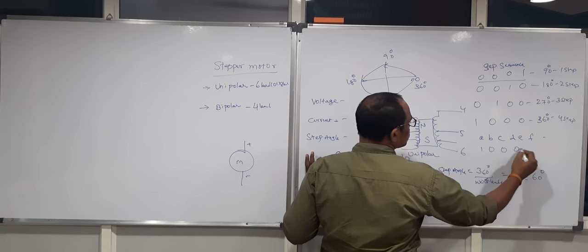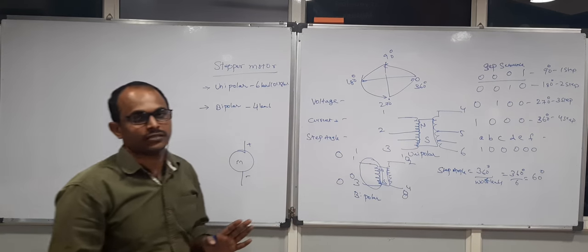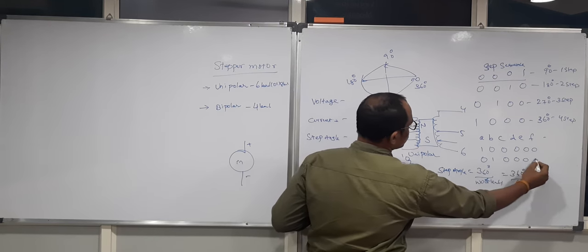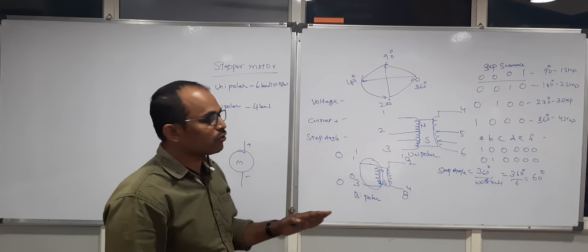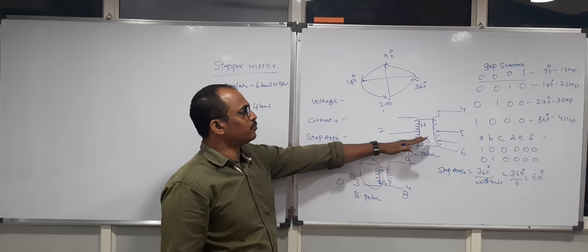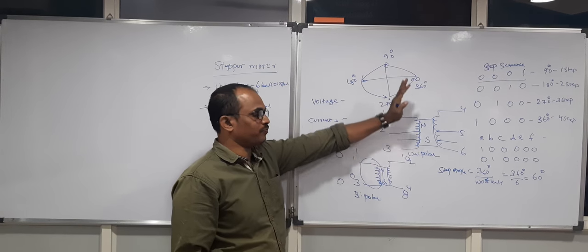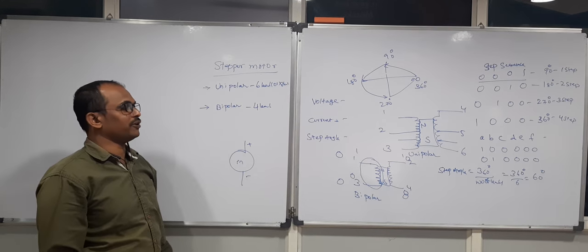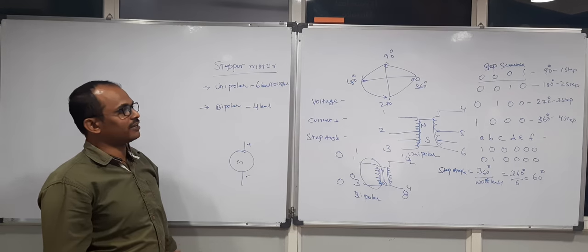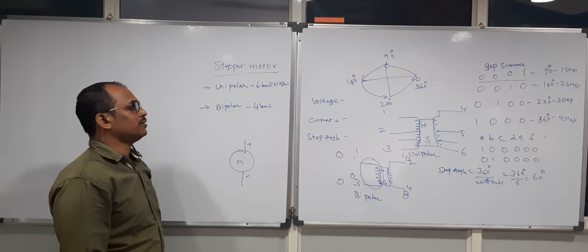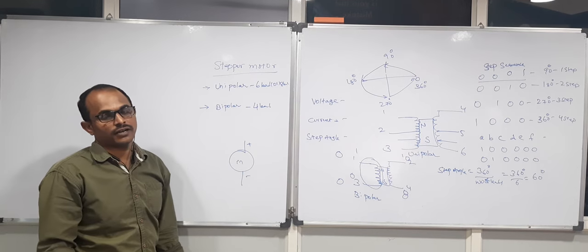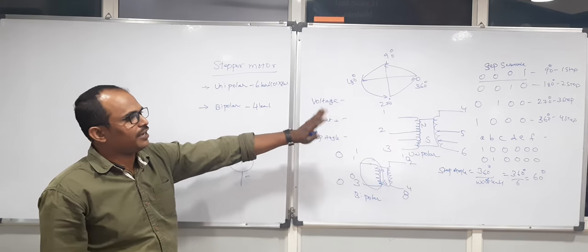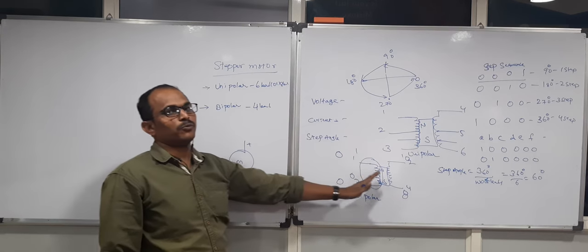You must follow the sequence compulsory — do not make logic high for other inputs out of order. For the next step the logic shifts: 0, 1, 0, 0, 0, 0, and so on. This is how you follow the proper sequence to achieve angle-based stepper motor rotation. This allows stepper motors to work at accurate positions — 45 degrees, 90 degrees, or 60 degrees — which is essential for robotics, industry-level systems, and CNC machines.